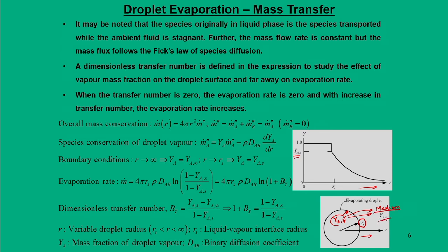The medium had an initial concentration of YA infinity. One important point is that the same species that was initially in the liquid phase goes to the vapor phase and then diffuses into the medium. There are only three species — fuel, oxidizer, and product — and the concentration difference is mainly for the fuel.